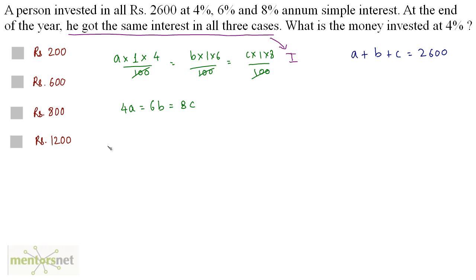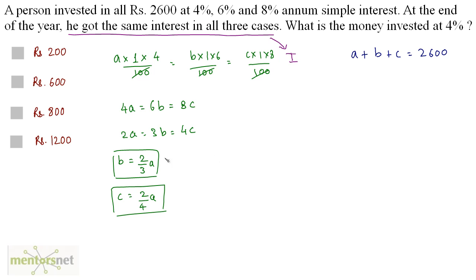Dividing all by 2: 2A equals 3B equals 4C. Therefore B equals 2/3 A and C equals 2/4 A. Substituting these values into A plus B plus C equals 2,600: A plus 2/3 A plus 2/4 A equals 2,600.